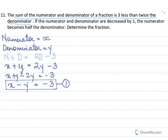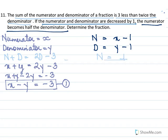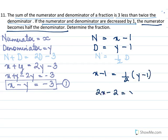The second part: if numerator and denominator both decrease by 1, the numerator becomes half the denominator. So (x minus 1) equal to 1 by 2 times (y minus 1). Cross multiplying: 2x minus 2 equal to y minus 1, giving 2x minus y equal to plus 1. This is equation 2.